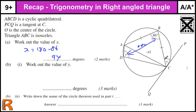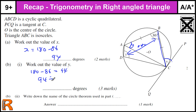To work out the value of Y, this angle here is the same as this angle here by the alternate segment theorem, because the angle formed from this chord which touches this angle in this segment is the same as Y. Because we've got an isosceles triangle here, 180 minus 86 is 94 again, but that's both of these angles, so we've got to do 94 divided by 2, which is 47 degrees. And the theorem used is the alternate segment theorem.